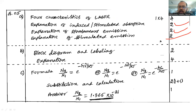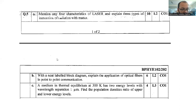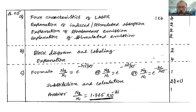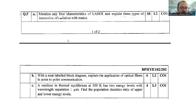A clear diagram or clear picture and flow of explanation is required in your answer book. Question number 5b: With a neat labeled block diagram, explain the application of optical fibers in point-to-point communication. The block diagram with suitable labeling carries 2 marks, and a proper explanation carries 4 marks, totaling 6 marks.